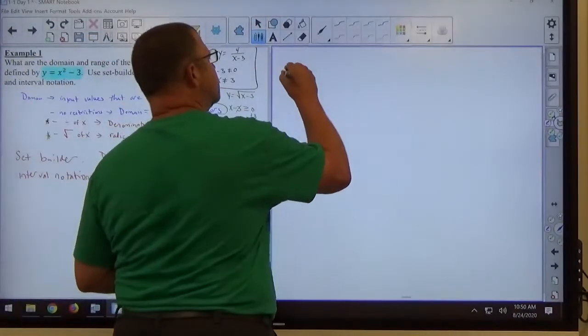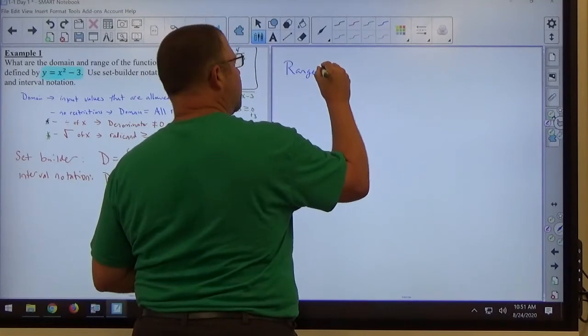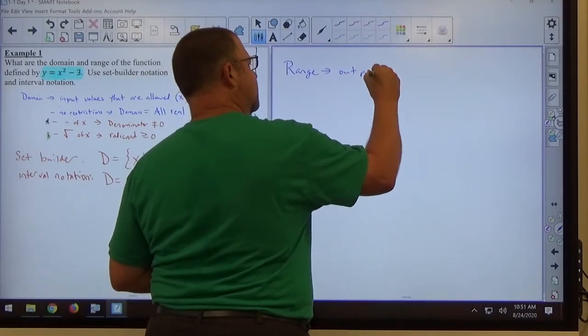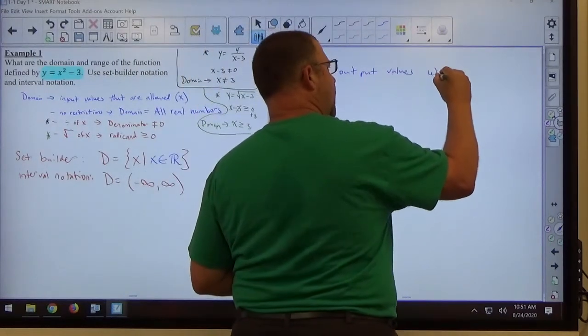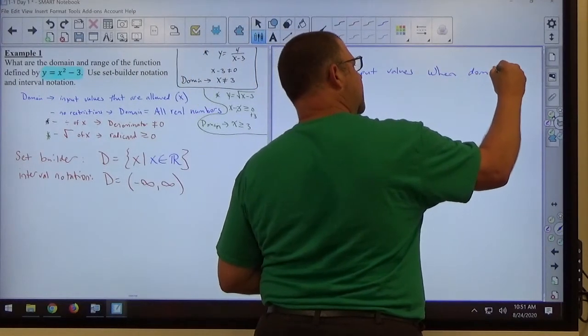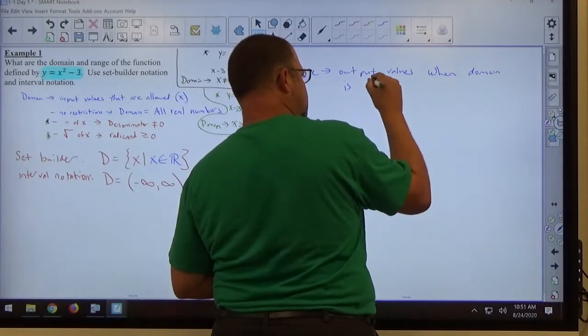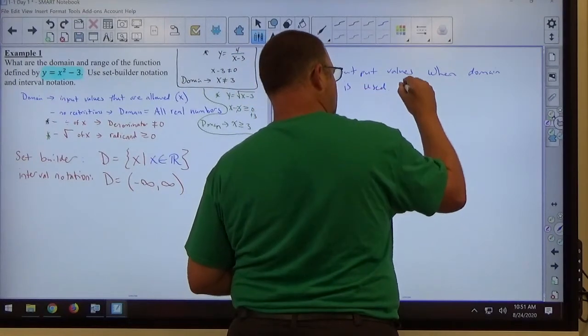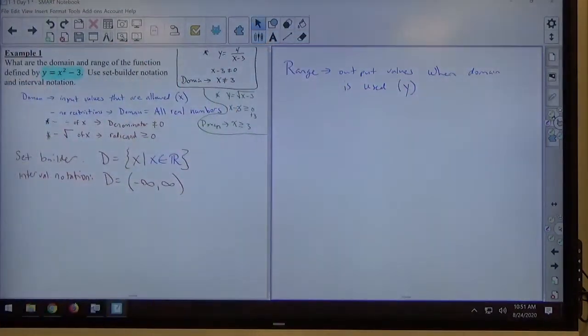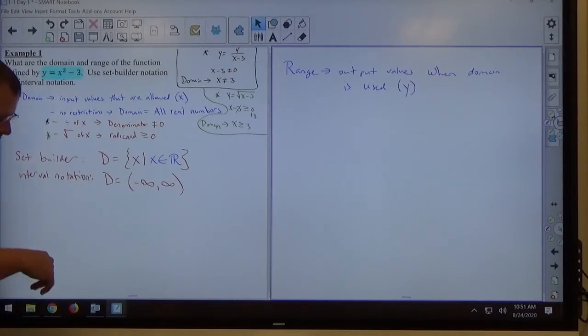Range is the output values when domain is used. And that has to do with y. We've got this list of x's we're allowed to use, and we're asking what type of answers come out of this function. That's what range is. When I put in the x values, what values do I get out for y? The easiest way to do this is with a table of values. Make an x, y chart. You pick x. You solve for y, and you make a determination based on that. Let's take a look at this one.